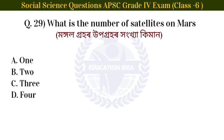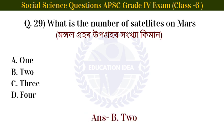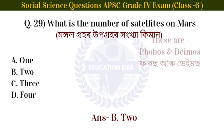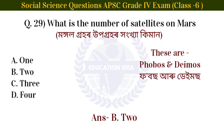Next question: what is the number of satellites on Mars? Option: 2 — Mars has 2 satellites, which are Phobos and Deimos.